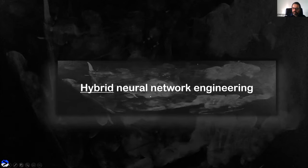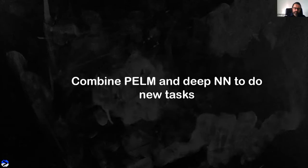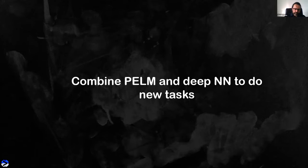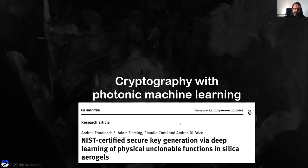Let me conclude by talking about what I call hybrid neural networks and hybrid neural network engineering — new devices combining all the power of conventional machine learning and photonics. There are many interesting possibilities. For example, you can combine a photonic extreme learning machine and a deep neural network for new tasks. In one paper we used this approach — a photonic system and a conventional deep neural network — to do cryptography, generating secure keys based on physical unclonable functions, with collaborators at KAUST University and the University of St. Andrews.